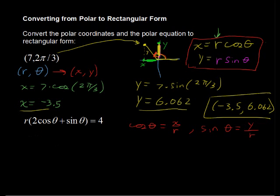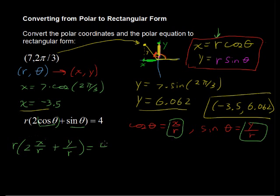All I've done is just divided each side by r in these equations, and then what we can do is plug those in for cosine and sine. We'll plug in x/r and y/r. So I've got r times 2 times x/r plus y/r, and that all equals 4.